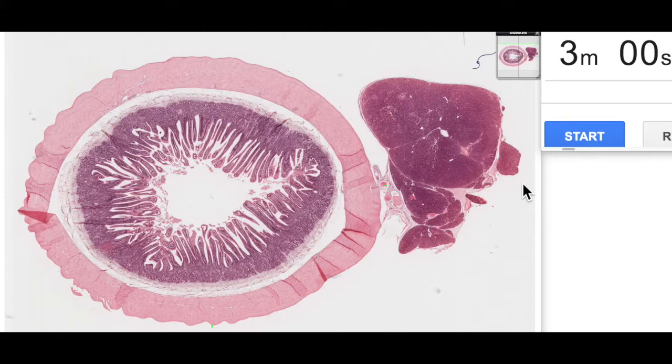Simple means one cell layer thick, all cells touching the basement membrane or basal lamina, and columnar means that the cells are like columns, so they're taller than they are wide. We're going to have a look at a couple of different examples of simple columnar epithelium that we find in the human body. So let's start our three minutes.